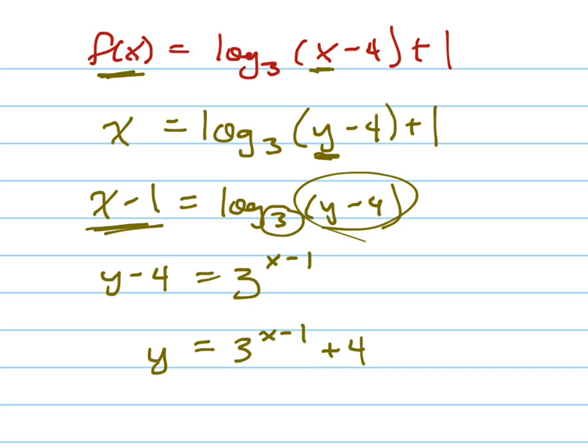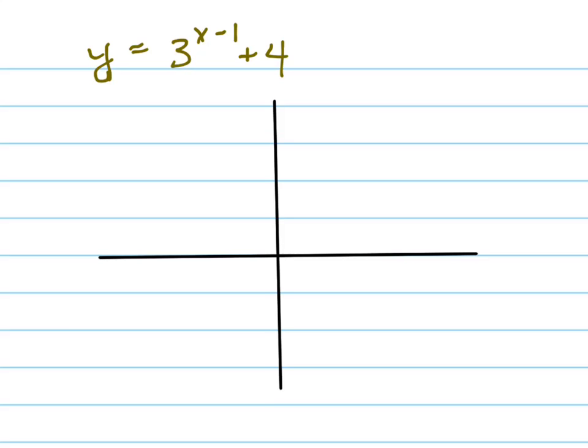So let's look at this graph now and let's graph this the same way that we graphed the other one. Let me go to a new page. y, which was actually my inverse function, equals 3 to the x minus 1 plus 4. Now let's talk about the graphs of exponential functions. What's the base graph of this function right here? I'm going to do this in black. What's the base graph of that? y equals what?